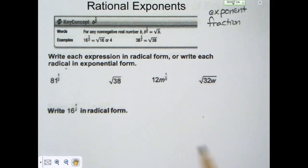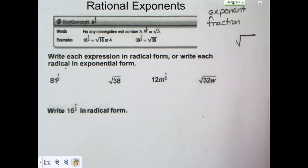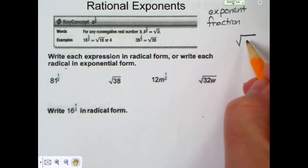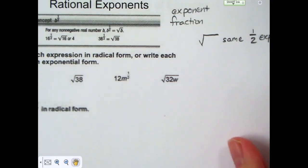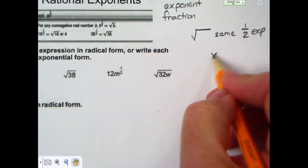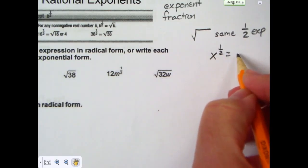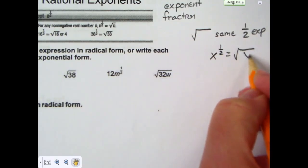We've all seen this symbol in math, the square root symbol. This square root symbol is the same as a one half exponent. So x to the one half power is the same as the square root of x.